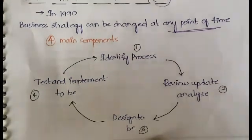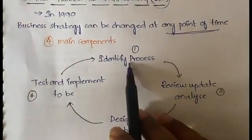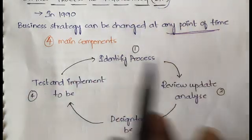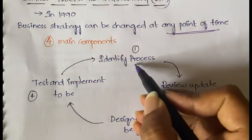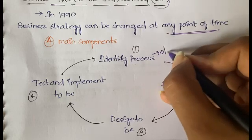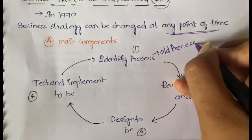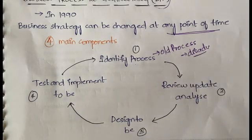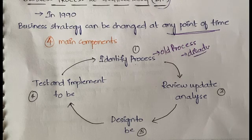In BPR we have four steps: identify the process, review, update analysis, design to-be, and test and implement to-be — and it follows a cycle. The first step is identifying the process. This step identifies the old process and what are the disadvantages of that old process. We list them all.